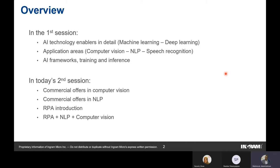We also discussed AI frameworks and what's called model training versus model inference, and the difference between them. In today's session we build on that, discussing commercial use cases in computer vision, NLP, robotics, and robotic process automation. This session is mainly about commercial offers from our vendors that you can offer to your customers.